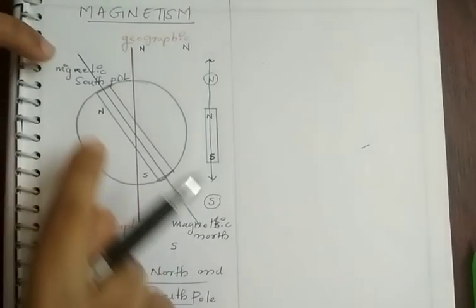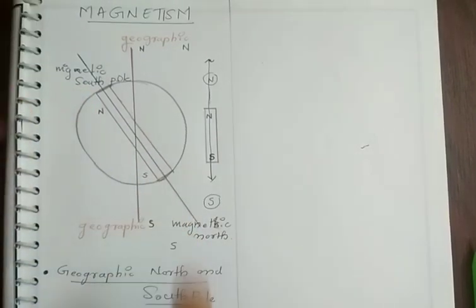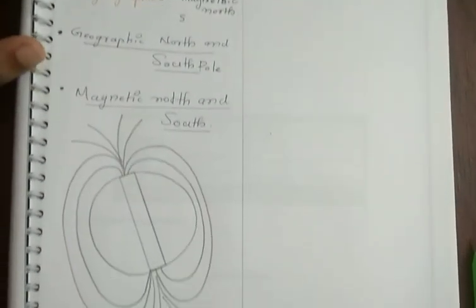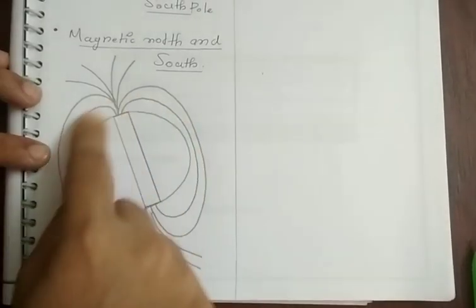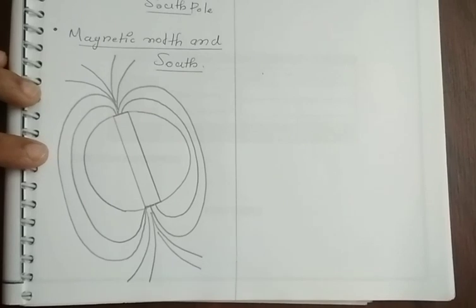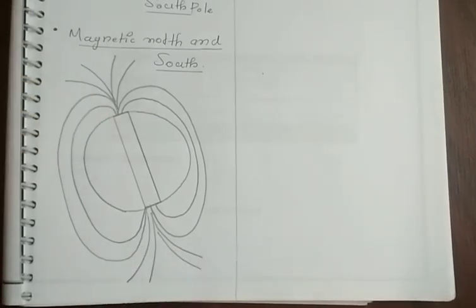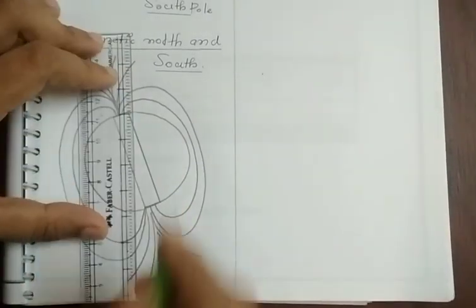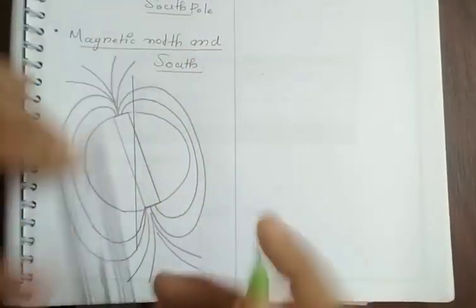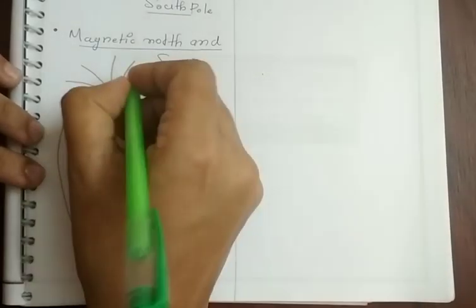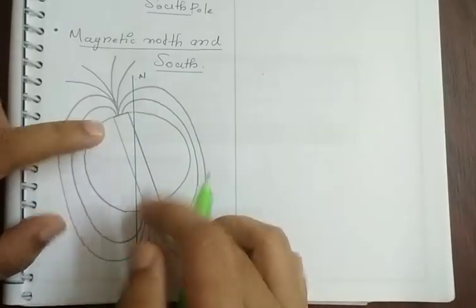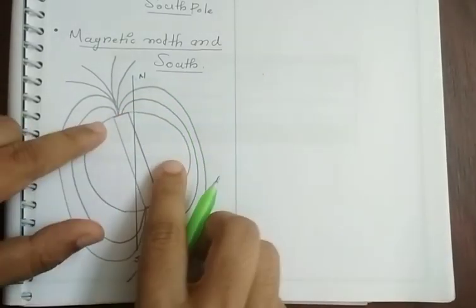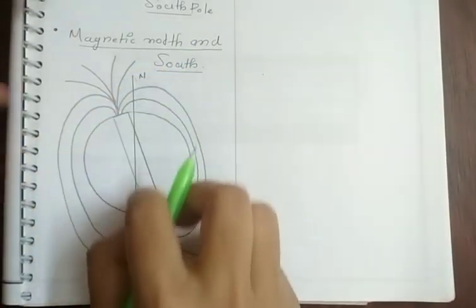Now, what is the significance of magnetic south pole and magnetic north pole? When we study the magnetic behavior of the earth, the earth behaves as a bar magnet — it acts as having a magnetic north pole and a magnetic south pole. This is the axis about which the earth is rotating, this is the north pole, and this is the geographic south pole. But the earth aligns itself as a bar magnet slightly different from the geographical poles.